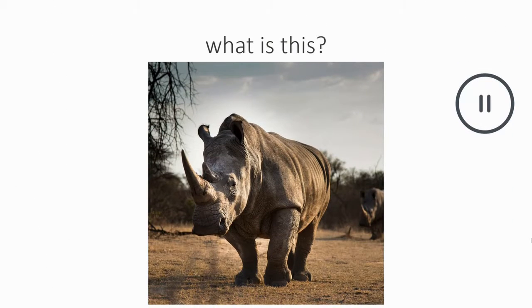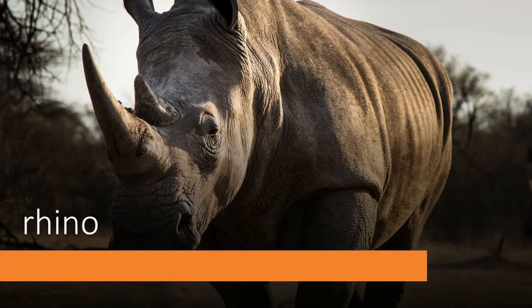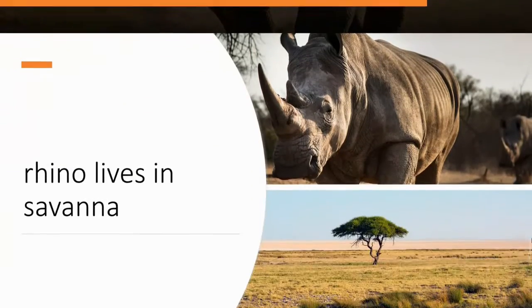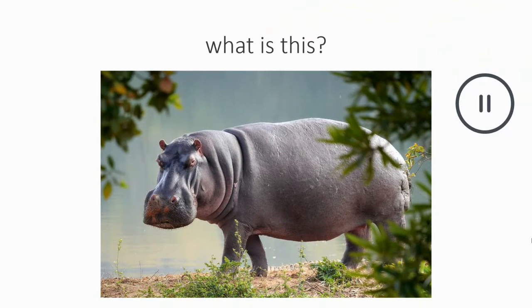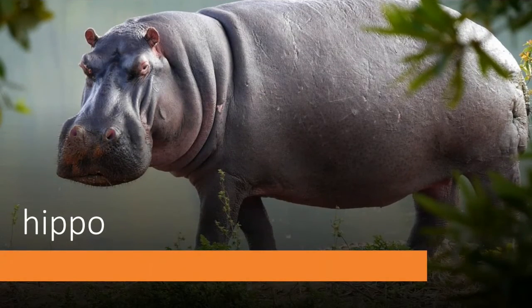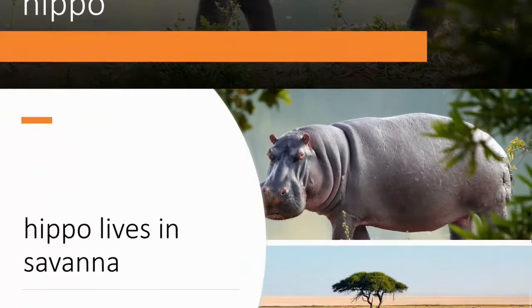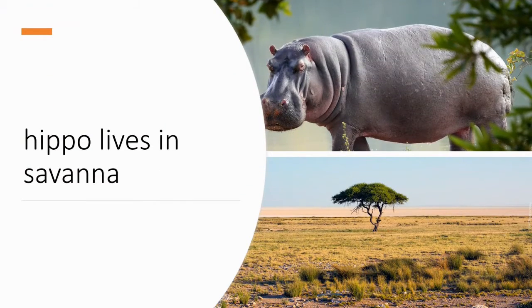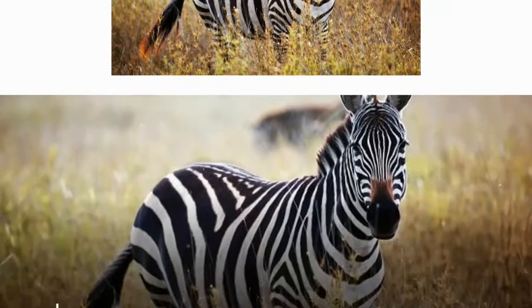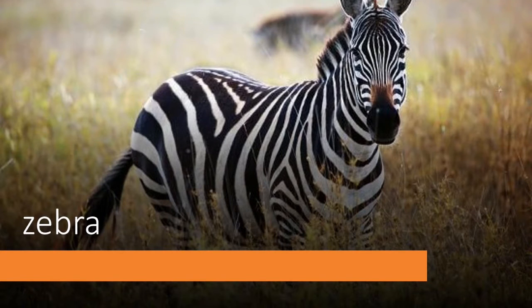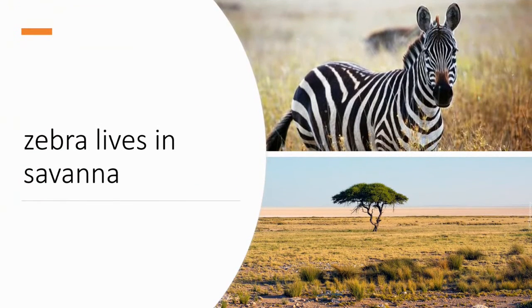What is this? Rhino. Rhino lives in Savannah. What is this? Hippo. Hippo lives in Savannah. What is this? Zebra. Zebra lives in Savannah.